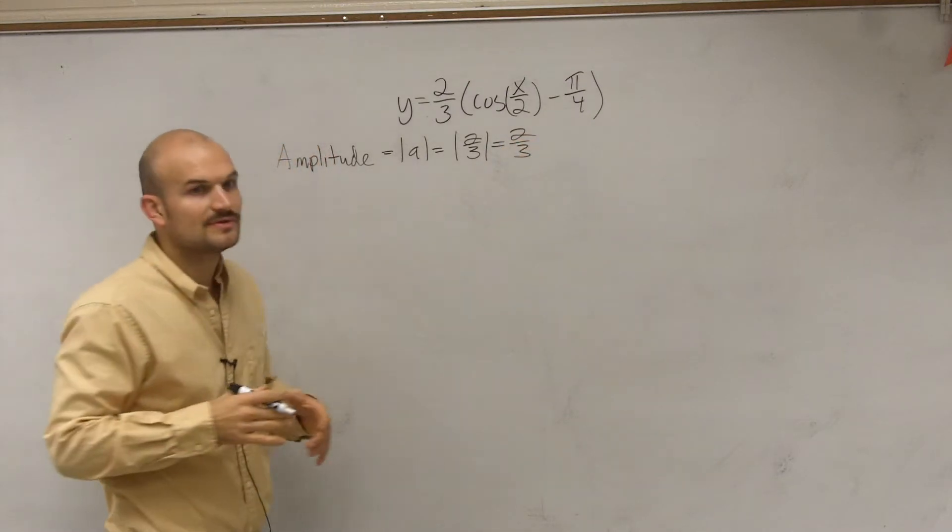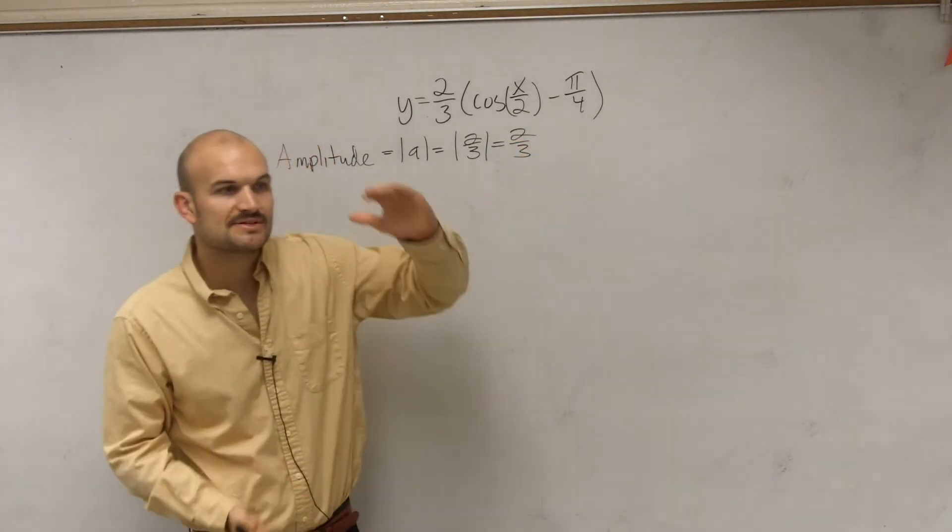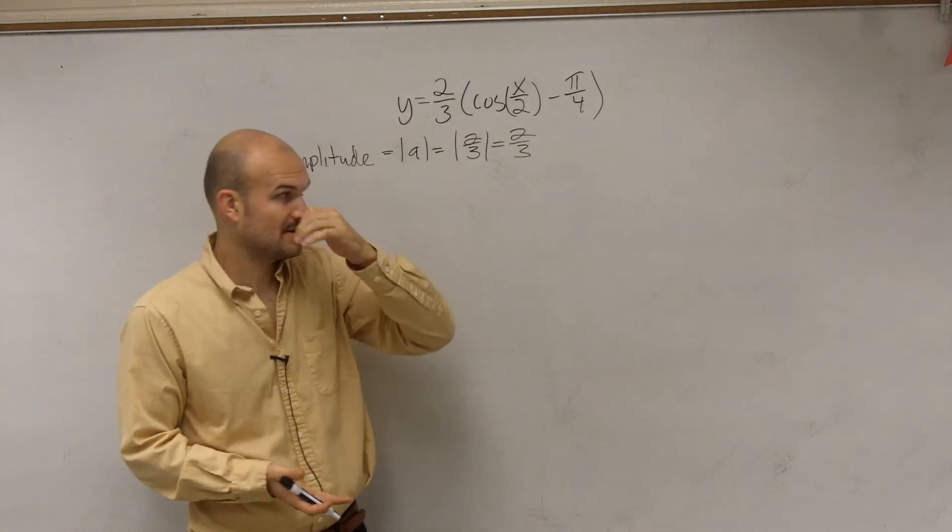So you have to know what your A is in every case. So remember the amplitude, that's gonna be the half distance between the maximum point of my graph and the minimum point on my graph.